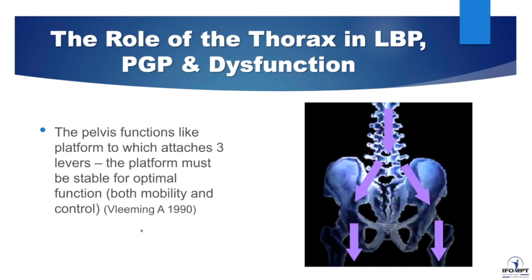Looking at the pelvis and its function — much of this original work was done by Professor André Fleming back in the early 1990s. We know that the pelvis functions like a platform to which it attaches three levers. If that platform is not stable — if the joints can't be well-controlled — then not much else works well in the body. We need optimal control in the pelvis and a small amount of mobility at the joints. The thorax, on the other hand, needs to be both mobile and controlled.